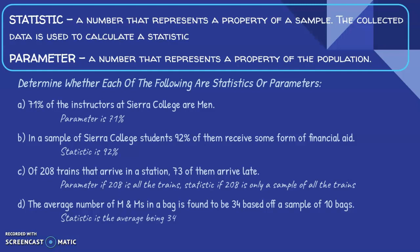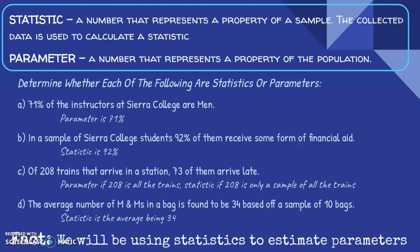Fact: we will be using statistics to estimate parameters. So a lot of times we'll be able to take the sample, calculate the statistic, and then we'll use that statistic to make an assumption or an estimation about the larger population's corresponding parameter. So what is the average age of a Sierra College student? Well, instead of sampling all 16,000 plus students, we could take a small sample of maybe 100 students, calculate their average age and say that that probably does a pretty good job of guesstimating what the population age of Sierra College students actually is.